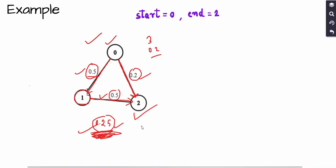This is a standard single-source shortest path problem — we're given a start node, an end node, and a weighted graph, and we need to find the maximum weight (probability) path. We cannot use BFS because it requires an unweighted graph. Instead, we use Dijkstra's algorithm. Other approaches like Bellman-Ford also work, but in this lecture we'll use Dijkstra's.